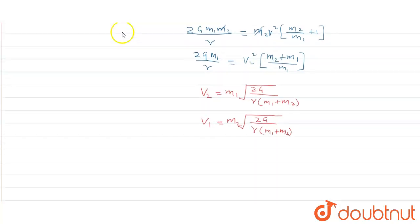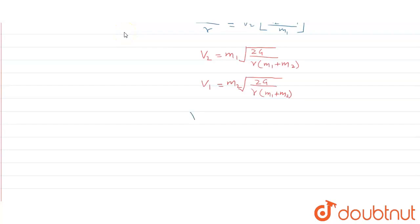Now velocity of approach will be v1 plus v2, that means m1 under root 2G upon r times m1 plus m2, plus m2 under root 2G upon r times m1 plus m2.